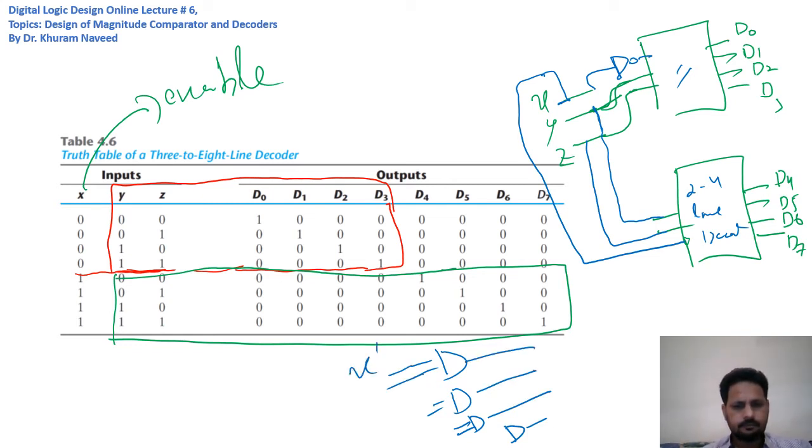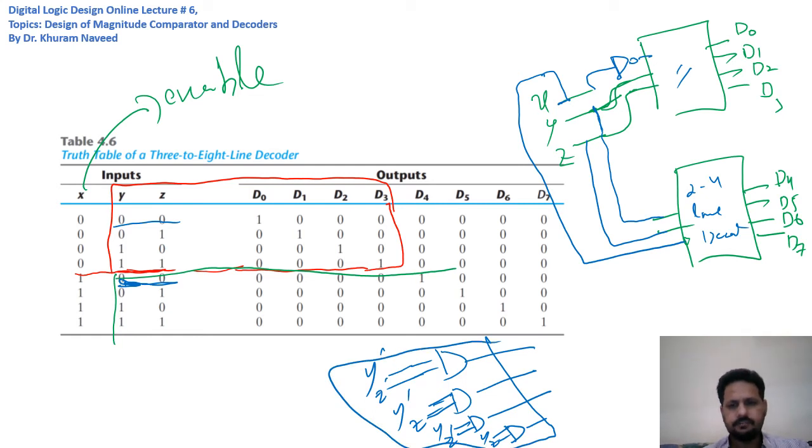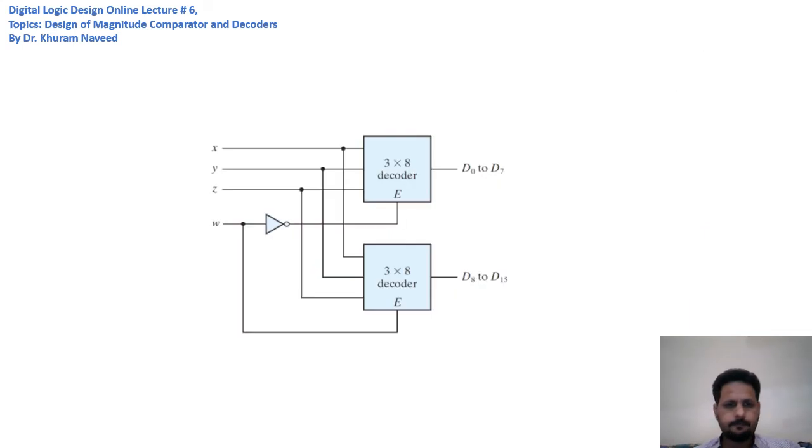This is y'z', not x'. This is y'z', and as we can see, these are repeating: y'z, yz', and yz. This is the two-to-four line decoder that I have enclosed in a box here. Similarly, we can combine two three-to-eight line decoders